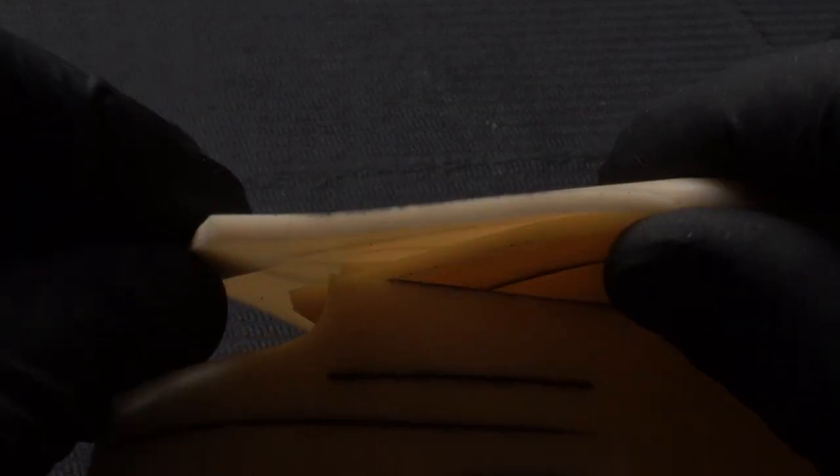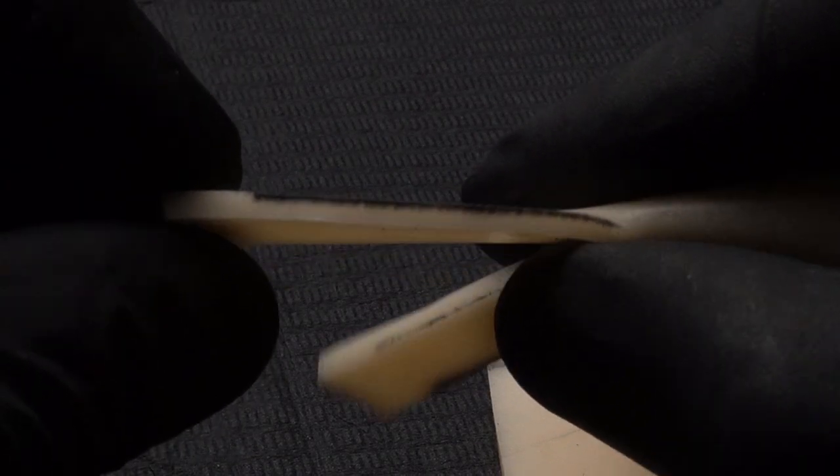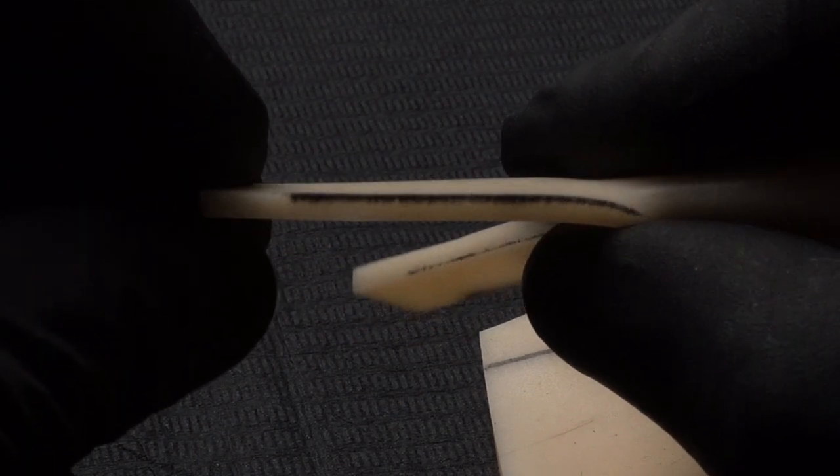As you can see the first line only hit the epidermis which means I've barely scratched the skin, so this line will not hold after it heals and most if not all of the ink will get pushed out. The second line hit the dermis, it's a nice consistent line and this is the depth you should be aiming for.